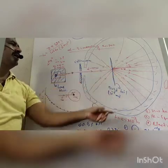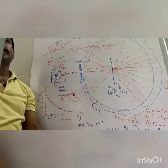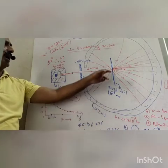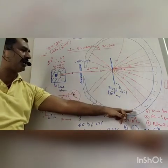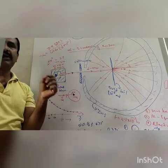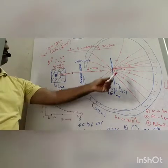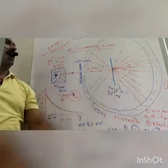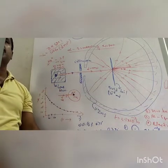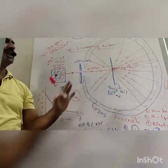This gold foil is surrounded by the zinc sulfide screen. This zinc sulfide screen is used because when the alpha particle collides or is incident on the zinc sulfide screen, it produces scintillation — meaning a bright flash is produced. The scattered alpha particles are detected using a detector with a microscope. A circular scale is also fixed for measuring the angle of scattering.